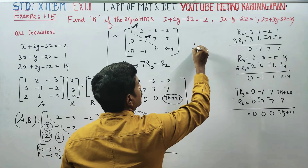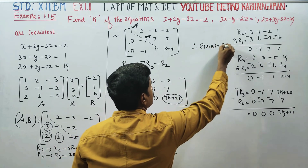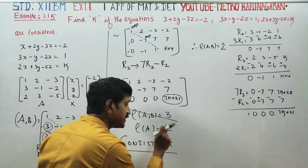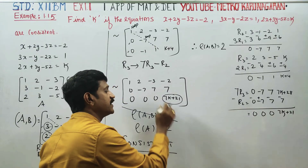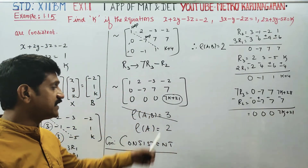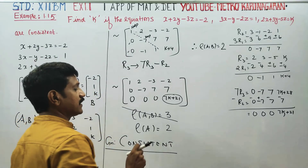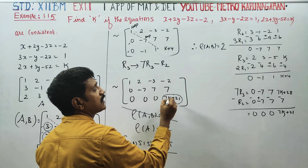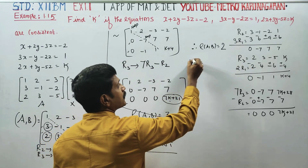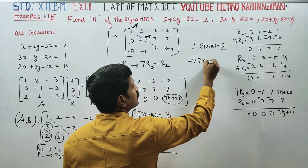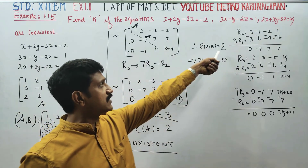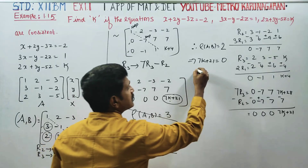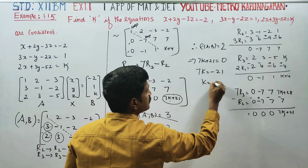For rank of A to equal rank of [A,B], both must be the same — otherwise the system is inconsistent. For consistency, rank of A equals rank of [A,B] equals 2. This implies that 7k plus 21 must equal 0. Therefore 7k equals minus 21, giving k equals minus 3.